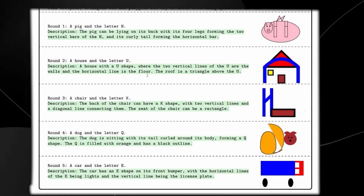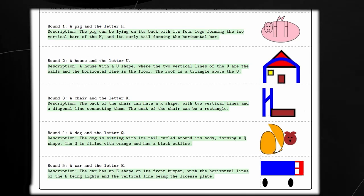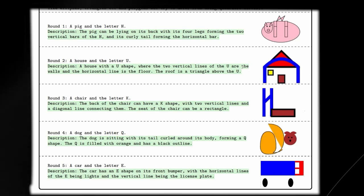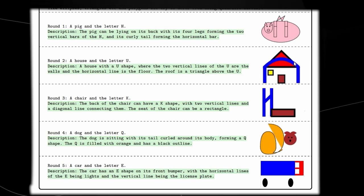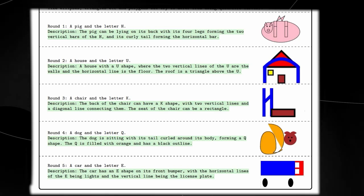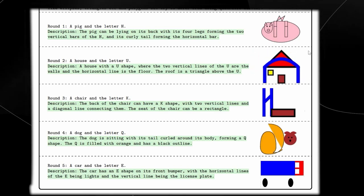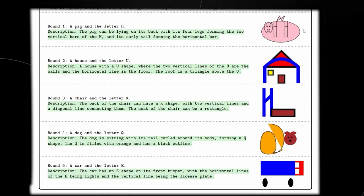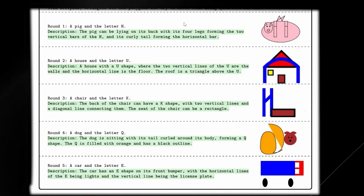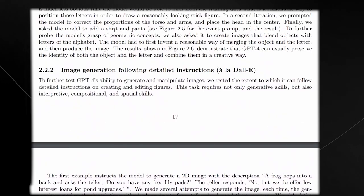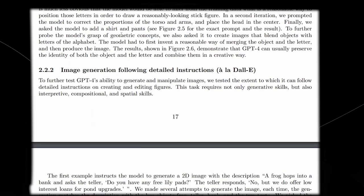You can see here, we have many more examples of it doing that very easily. A house and the letter U, a house with a U shape, where the two vertical lines of the U are the walls, and the horizontal line is the floor, and the roof is a triangle above the U. This just shows that it's able to do this very effectively. Because GPT-4 isn't exactly trained on images, we would expect some hallucinations or many mistakes, but that's not something that we get.